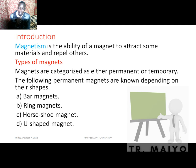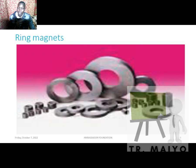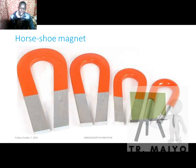We have permanent magnets and temporary magnets. Permanent magnets are named depending on their shapes. We have the bar magnet, the ring magnet, the horseshoe magnet, and the U-shaped magnet. The horseshoe magnet behaves like the shoe of a horse. The bar magnet looks like a bar. The ring magnets form rings. The U-shaped magnet looks like the letter U, and each magnet has a north pole and a south pole.